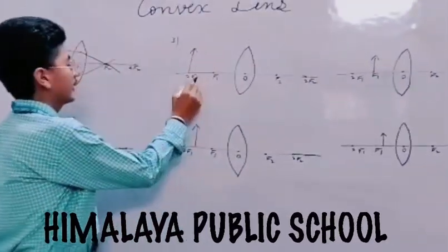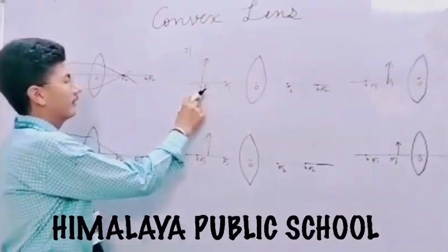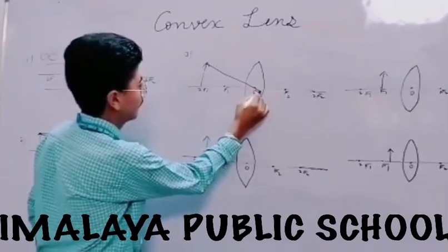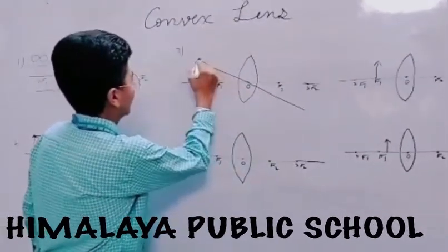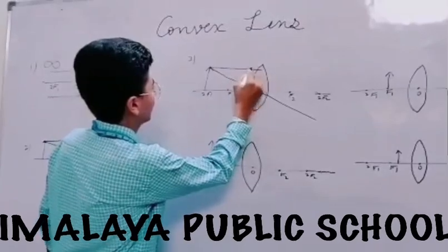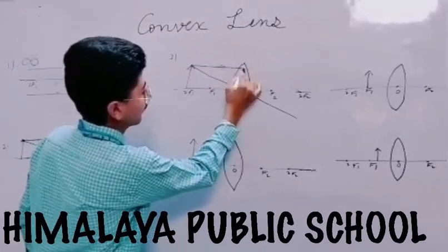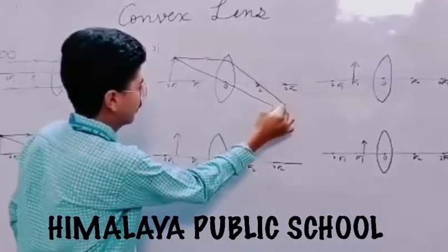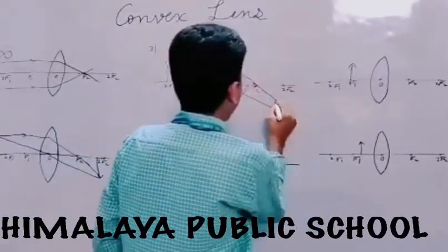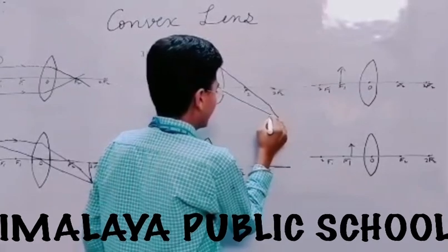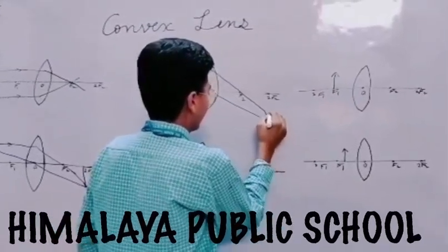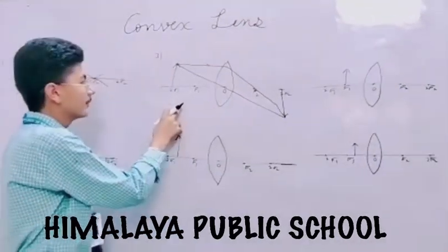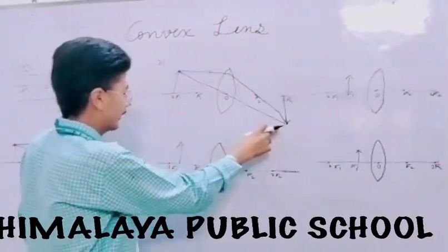Third condition is when the object is placed at the second focus. The first ray is passing through the optical center and the second ray is coming parallel to the principal axis. After refraction it will pass through the focus. You can see both rays are meeting at the second focus. So the size of the image is the same as that of the object and the image formed is real and inverted.